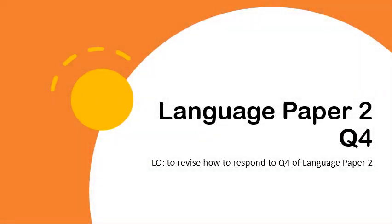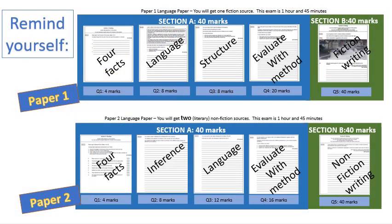In this session we're going to have a look at Language Paper 2, Question 4, with the aim of revising how to respond to this question in the exam. This is an overview of each of the papers for the Language GCSE. Question 4 is worth 16 marks and it's the last question in the reading section. You have to evaluate two sources and talk about their use of methods as well.